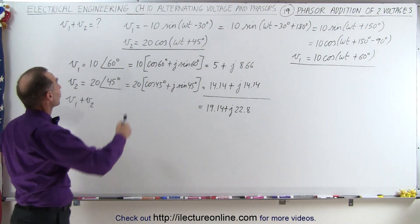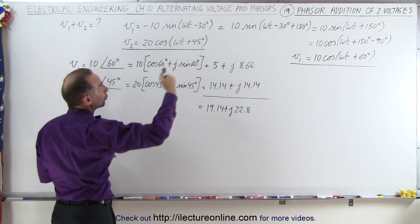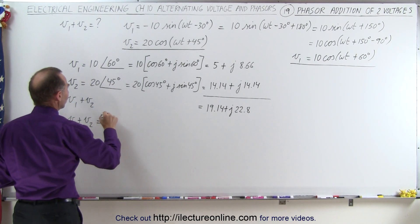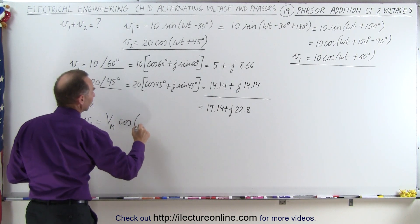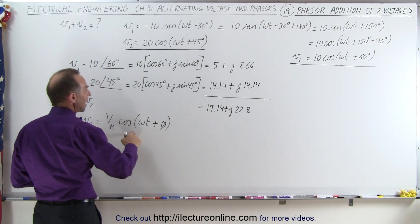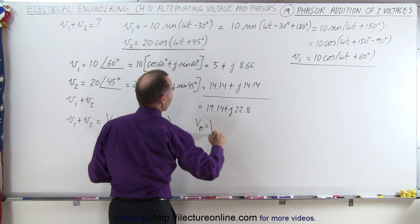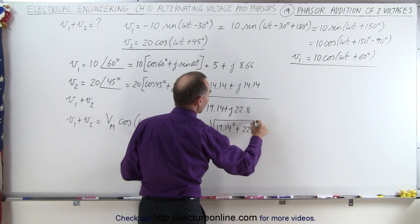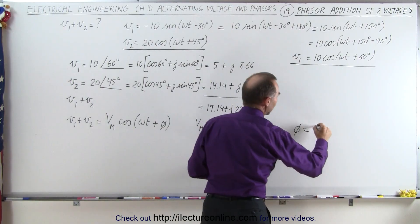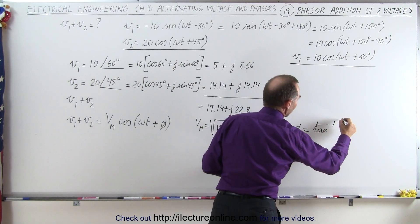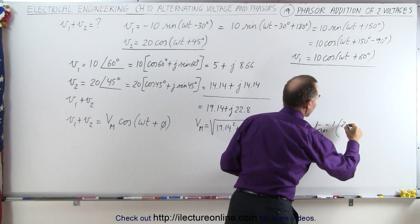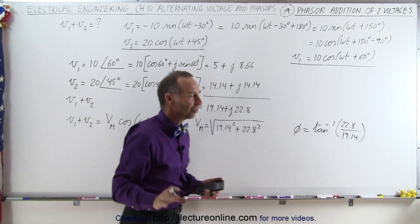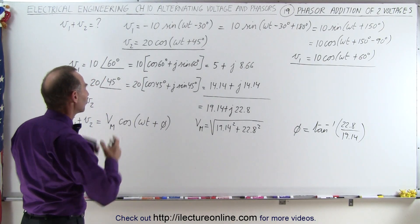We don't want to leave it in that form, because our voltages were expressed in the time domain, so we want to reconvert back to the time domain. V1 plus V2 is going to equal Vmax times the cosine of omega t plus the phase angle. Vmax is equal to the square root of the sum of the squares of the components: 19.14 squared plus 22.8 squared. The phase angle can be found by taking the inverse tangent of the imaginary part, 22.8, divided by the real part, 19.14. You can see how much easier it is to convert to the phasor domain to find the sum of the voltages.